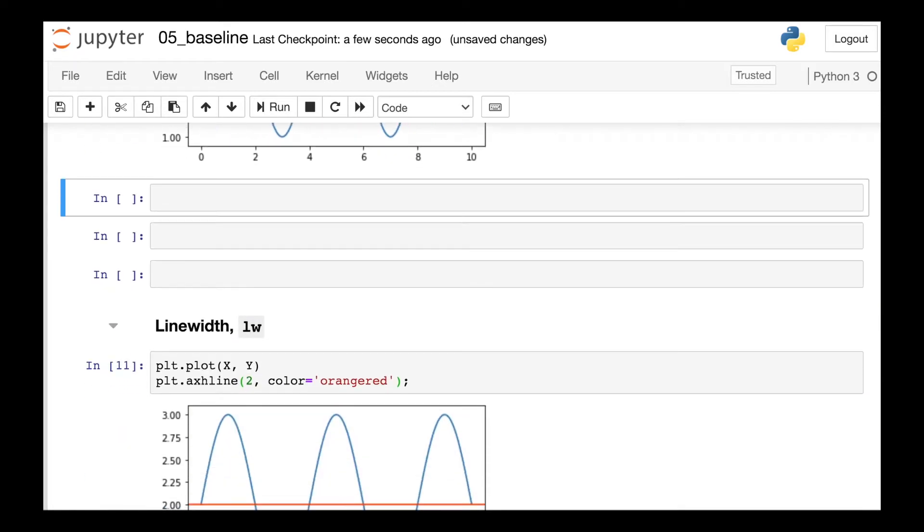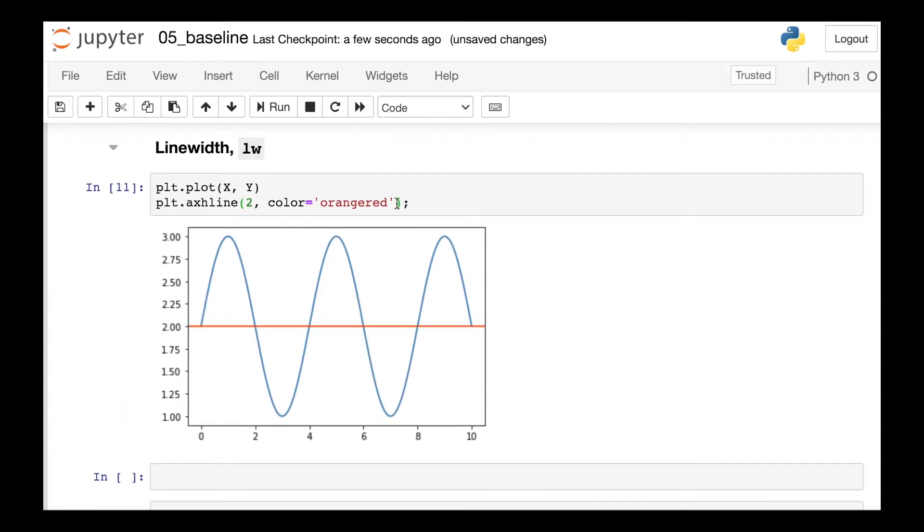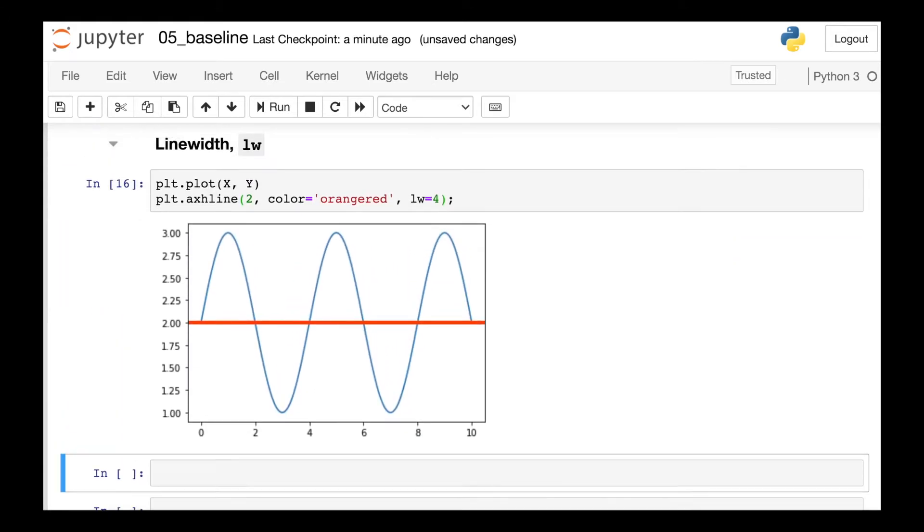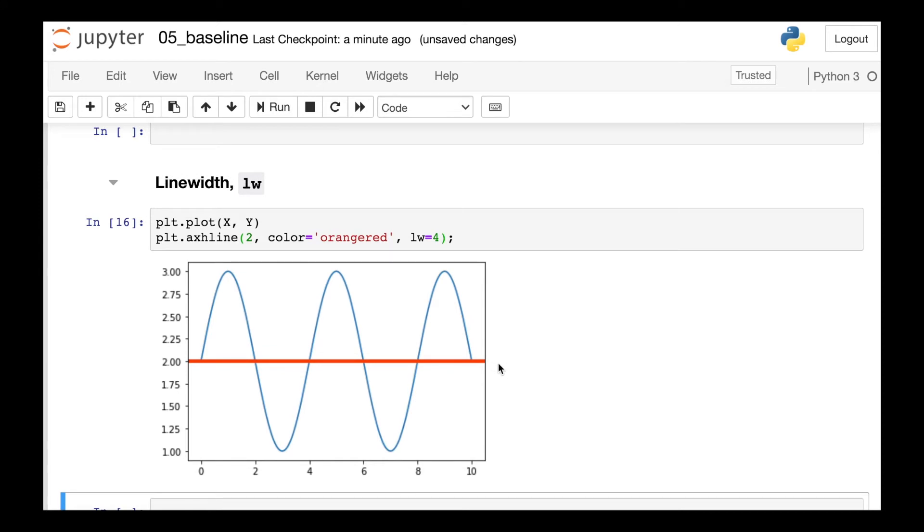If you'd like that line to appear thicker, you can reference this line width property, or LW for short. 1 is the default LW value, but we can increase this to make a thicker line if we'd like.